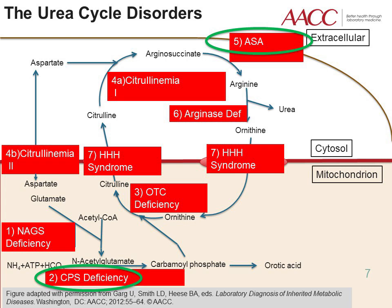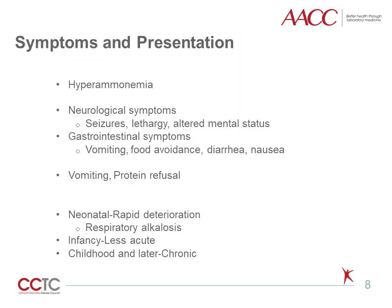This slide is a graphical representation of what steps are affected in the individual disorders. For example, CPS deficiency affects the conversion of ammonia and N-acetylglutamate to carbamoyl phosphate, shown on the lower left of the slide. The main effect seen is usually an accumulation of the substrate and/or a decrease of the product for the affected step in the cycle.